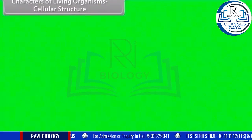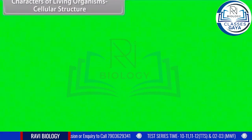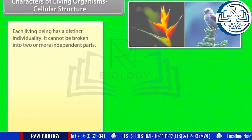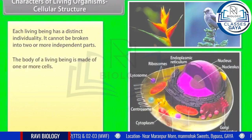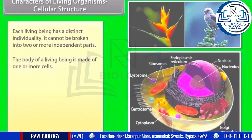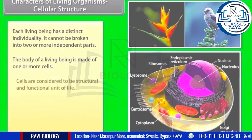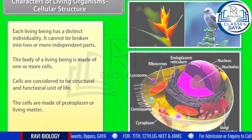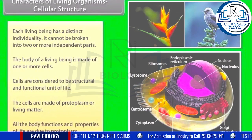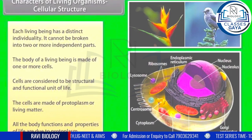Characters of living organisms — Cellular structure: each living being has a distinct individuality. The body of a living being is made of one or more cells. Cells are considered to be the structural and functional unit of life. The cells are made of protoplasm, or living matter. All the body functions and properties of life are due to protoplasm.